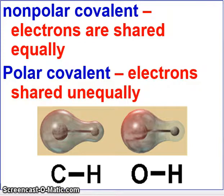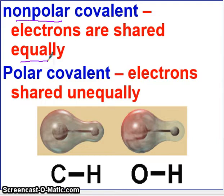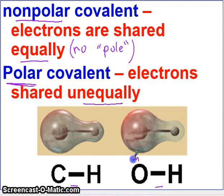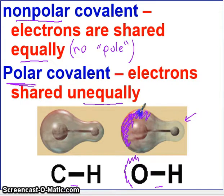We can talk about whether electrons are shared equally or unequally. In a nonpolar covalent bond, the electrons are shared equally, which means there really isn't a pole — no positive and negative pole. If you do have a pole, it's called a polar covalent bond, where electrons are shared unevenly. For example, between oxygen and hydrogen: oxygen, being more electronegative, will actually pull the electron density toward itself. You can see the electron density around hydrogen becoming thin while oxygen grabs more of the shared electrons.